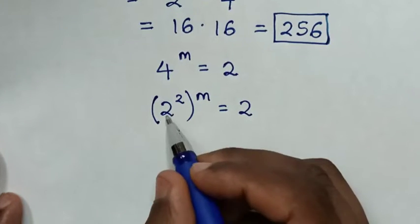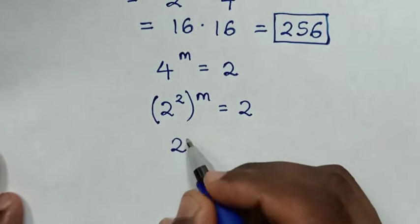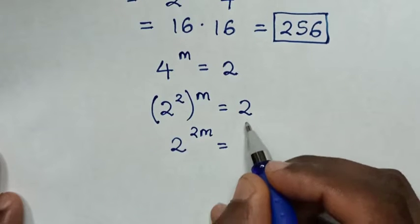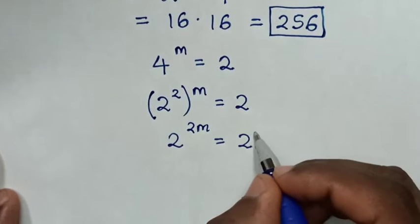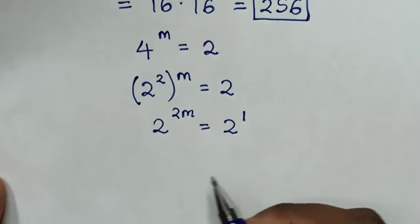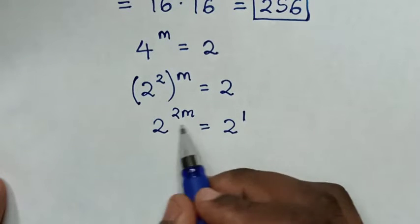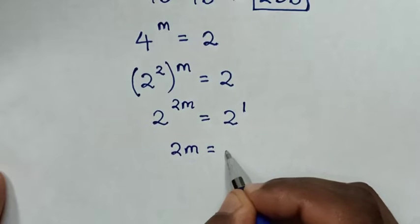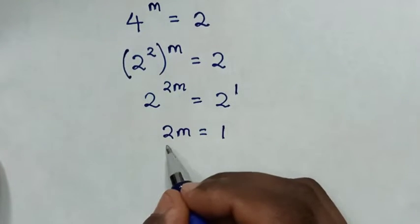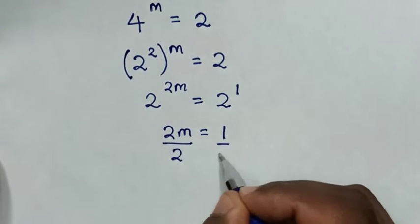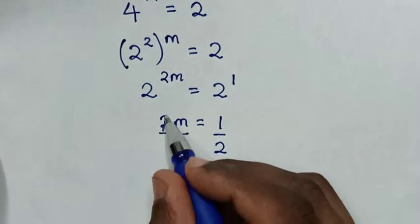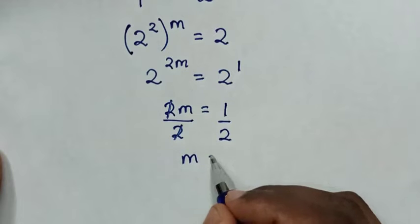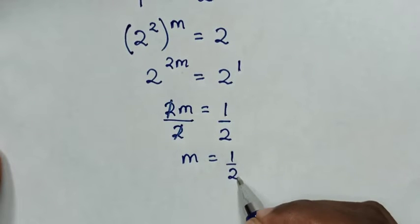In the next step, it will be 2 power of 2m is equal to 2, which is the same as 2 power of 1. Now we have the same base of 2, so we'll compare the powers. Then 2m is equal to 1, and we'll divide by 2 on both sides — this and this will cancel — then m is equal to 1 over 2.